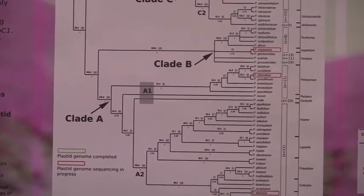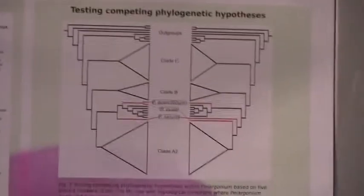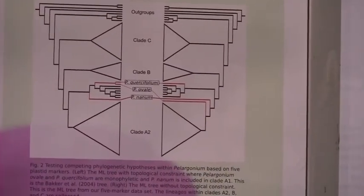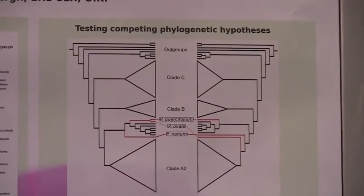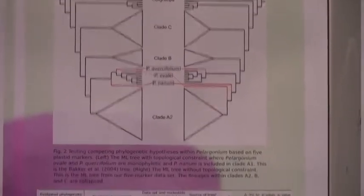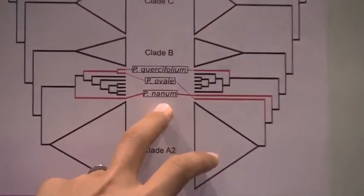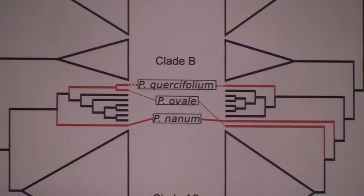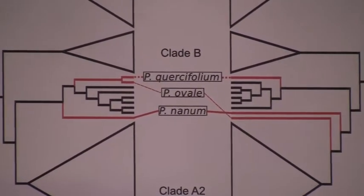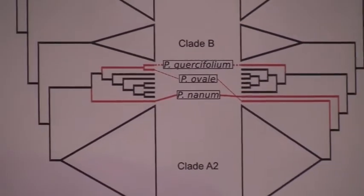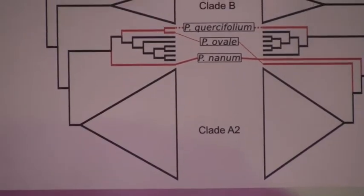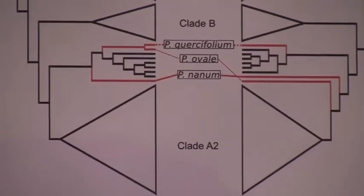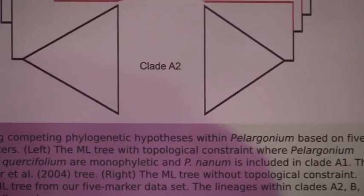I compared a previous study from Baker et al. 2004 and my result to do a topology test. However, the result still leaves two species — Pelagonia ovale and Pelagonia nanium — with their phylogenetic relationship still unresolved. So I may need to further sample some taxa of these related species.